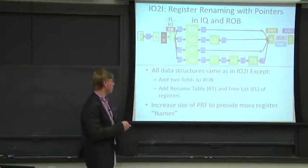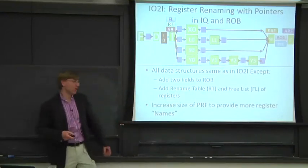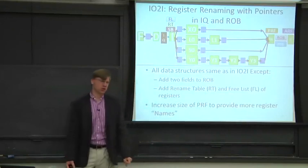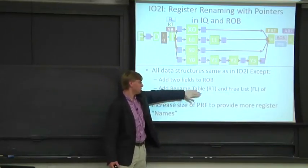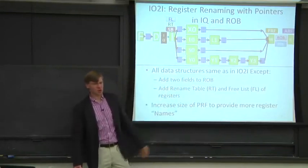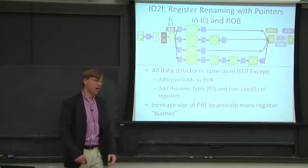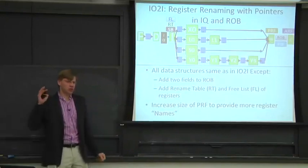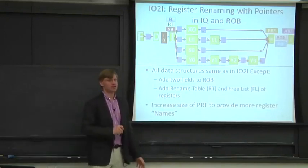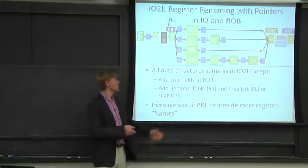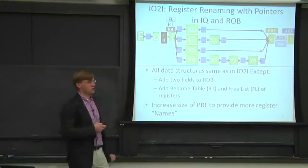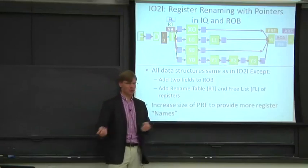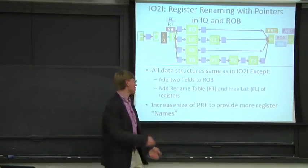The other structure is the rename table — sometimes called the RAT, which is Intel's nomenclature. The RAT maps from an architectural register to the most up-to-date version in our physical register file. When an instruction is at the decode stage and needs to find a value, this table tells us where to look. Since we've renamed everything, values are in physical registers under different names, and the rename table resolves that.